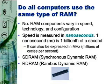RAM speed can also be expressed in megahertz, or millions of cycles per second. Just the opposite of nanoseconds, higher megahertz ratings mean faster speeds. For example, 533 megahertz of RAM is faster than 400 megahertz of RAM.